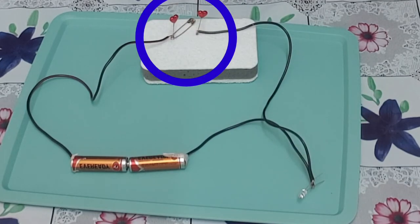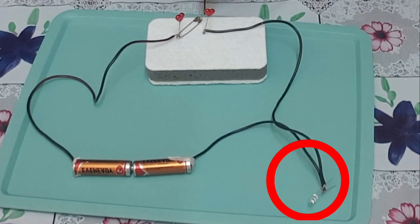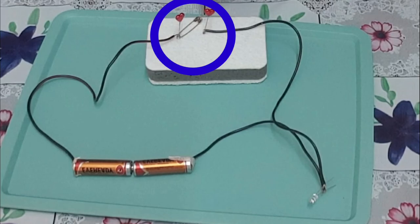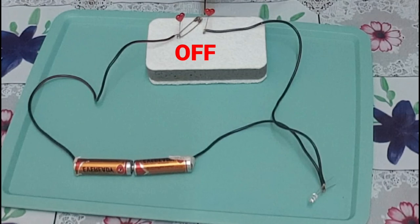Now move the safety pin away. Does the bulb continue to glow? The bulb did not glow when the safety pin was not in touch with the other drawing pin. The circuit was not complete as there was a gap between the two drawing pins. In this position, the switch is said to be off.